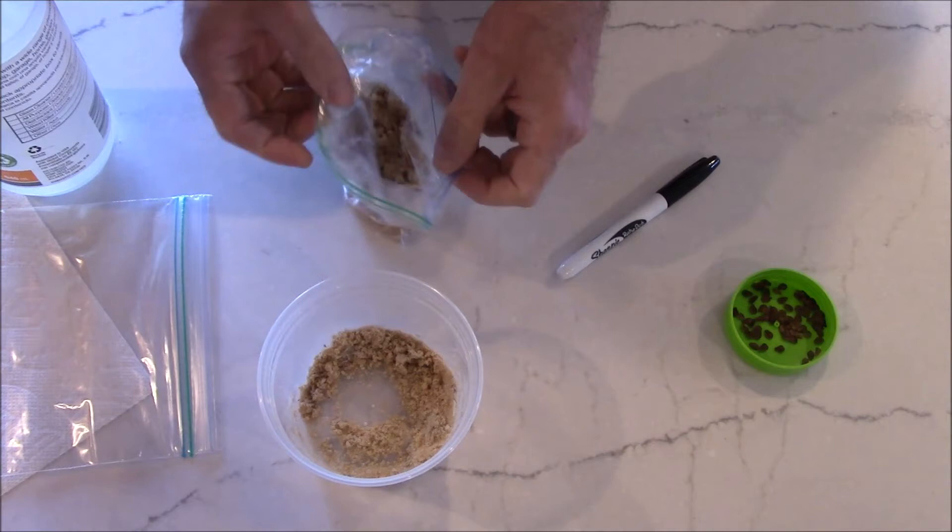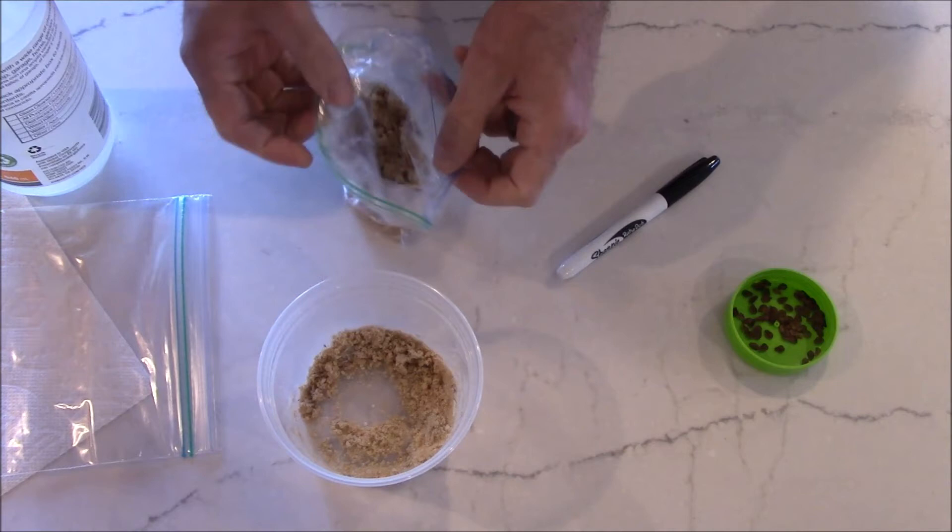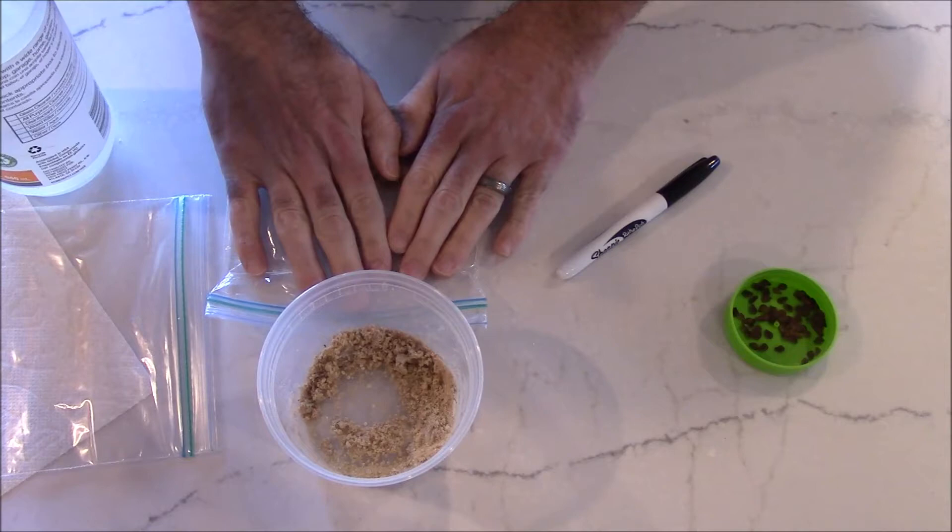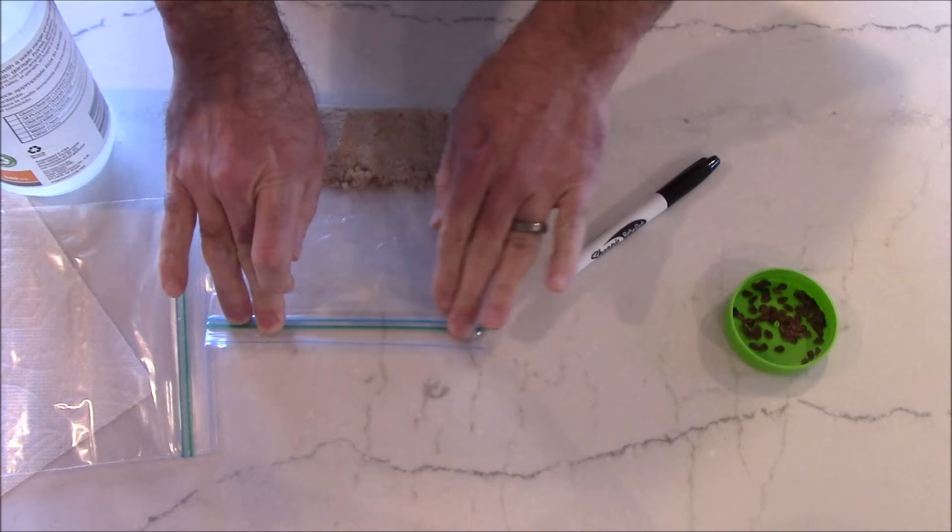I generally don't use sand unless it's a really big seed. The biggest ones I ever tried to germinate this way was like witch hazel, those seeds are really big. But anyways, so that's it. Now we just need to label it and we can toss it in the fridge. I like to flatten it out and squeeze the air out too.